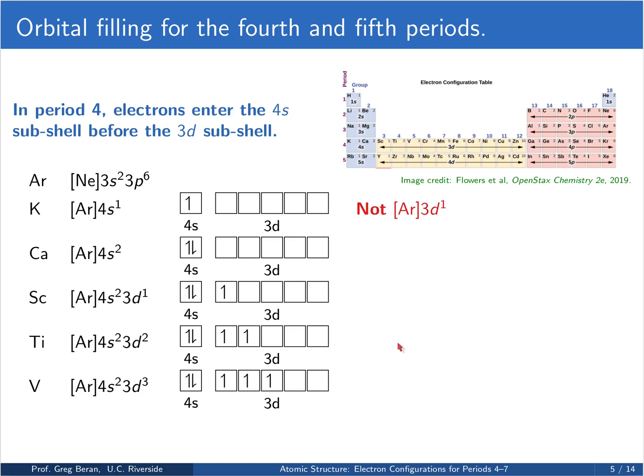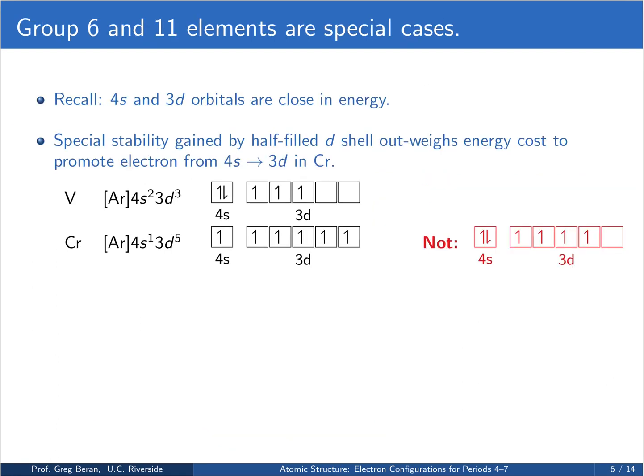Following these rules, you might expect then that chromium would have a configuration like this, a 4s2 3d4. However, it turns out this is wrong. Chromium is the first exception to our rules of thumb. In fact, both group 6 and 11 elements are special cases. So recall that the 4s and 3d orbitals actually lie quite close in energy. It turns out there's a special stability gain by having a half-filled d-shell that's greater than the energy cost required to promote an electron from the 4s to the 3d orbital in chromium. So whereas vanadium has a 4s2 3d3 configuration, chromium actually has a 4s1 3d5 configuration to obtain that half-full 3d shell.